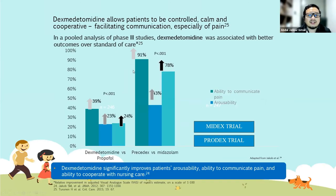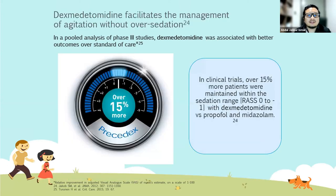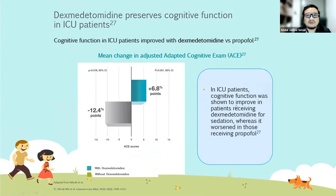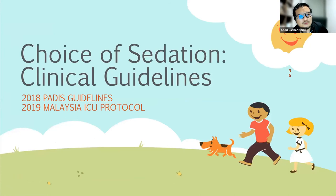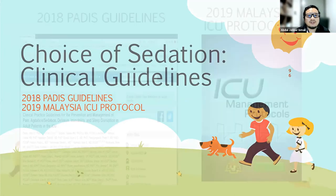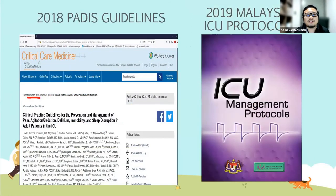From the MIDEX-PRODEX trial, patients on dexmedetomidine could communicate better, convey pain better, and showed better arousability and cooperation. It also preserves cognitive function — cognitive function improved in patients receiving dexmedetomidine for sedation, whereas it did not in those receiving propofol. A full analysis of studies shows dexmedetomidine was associated with shorter mean time to extubation, shorter mean duration of mechanical ventilation, and shorter mean ICU stay.